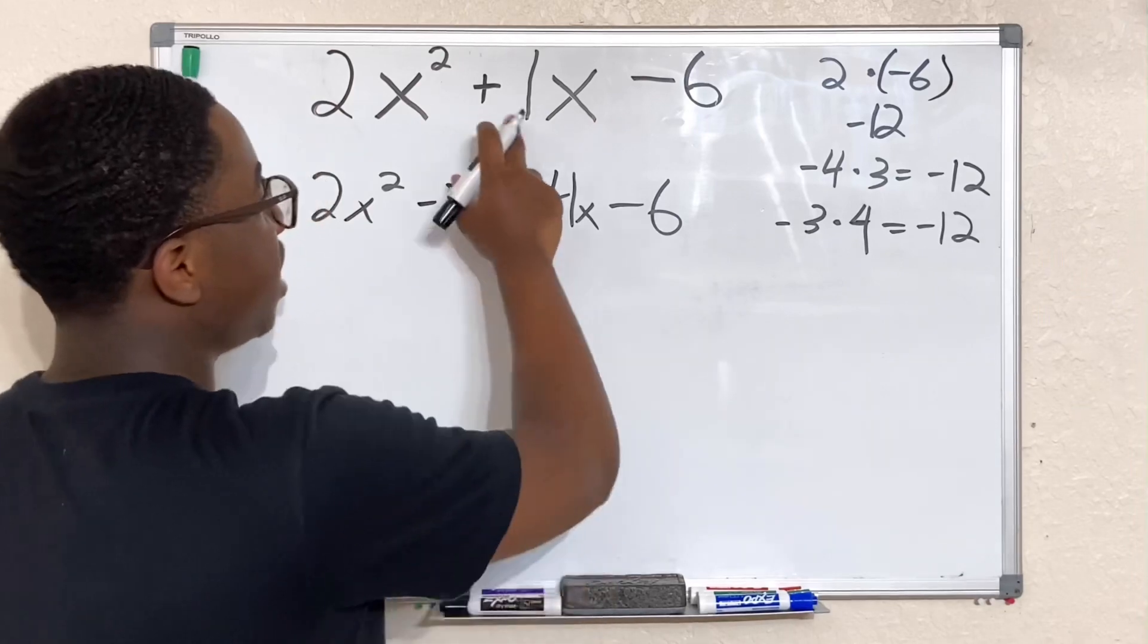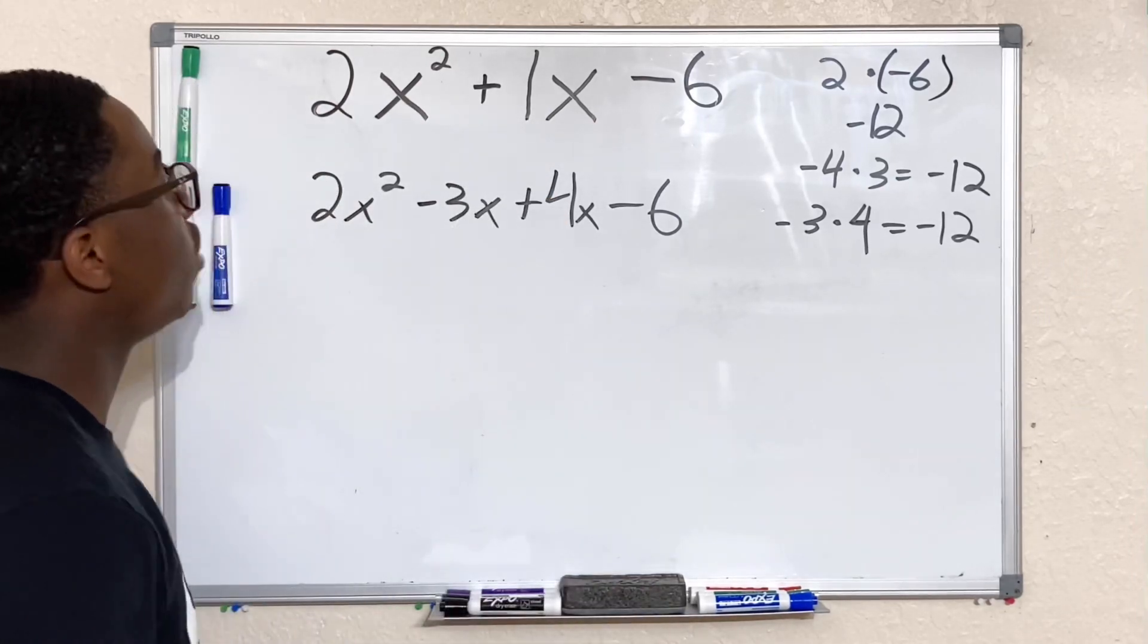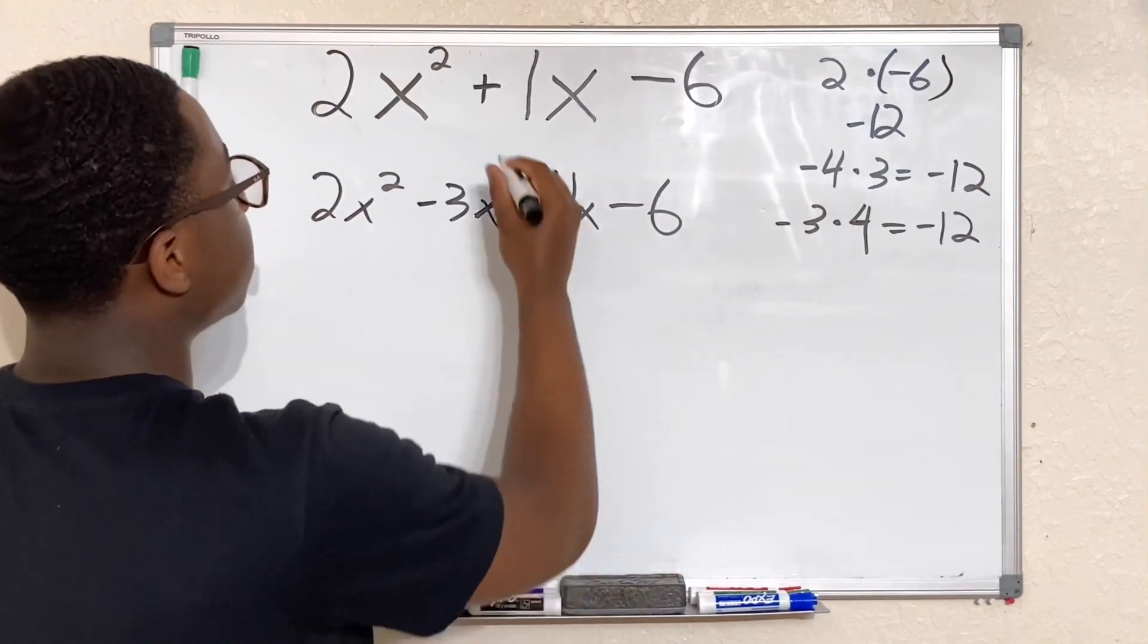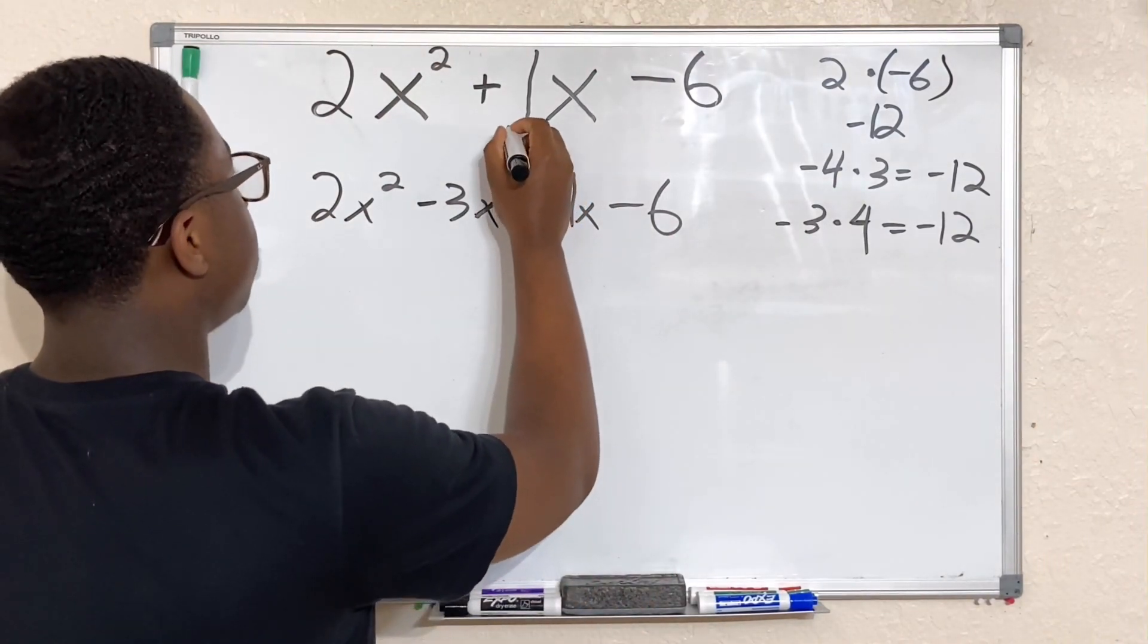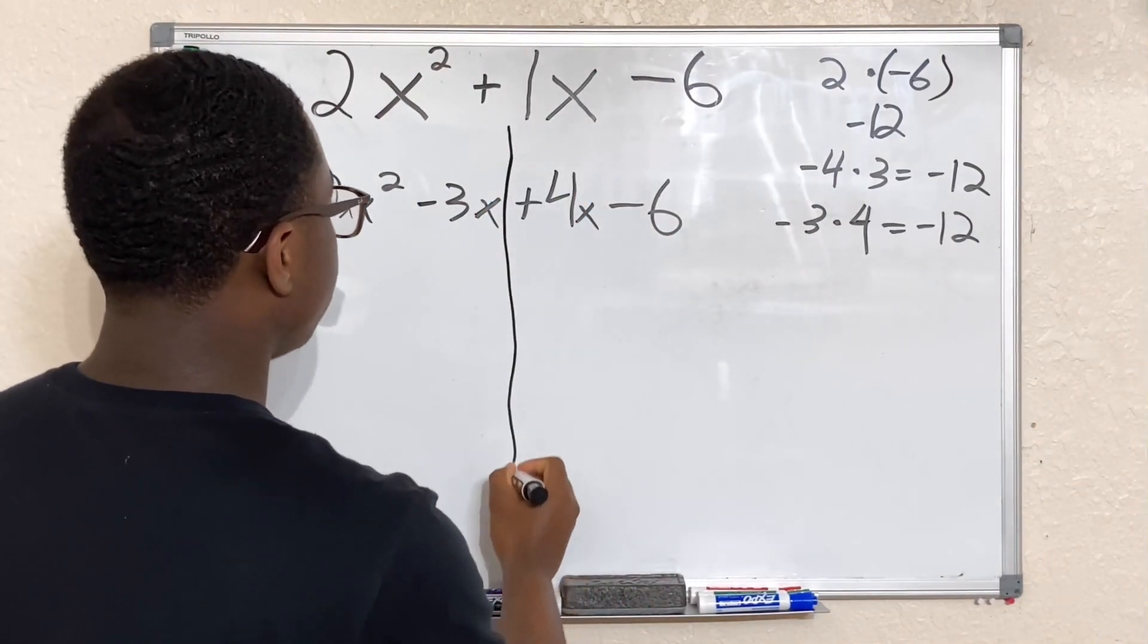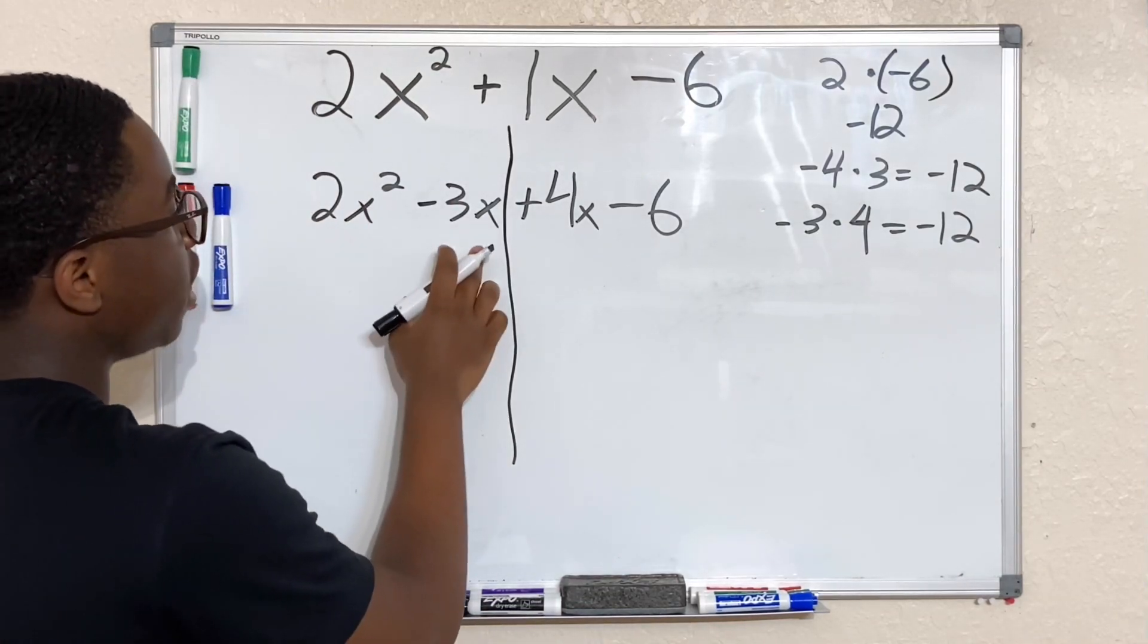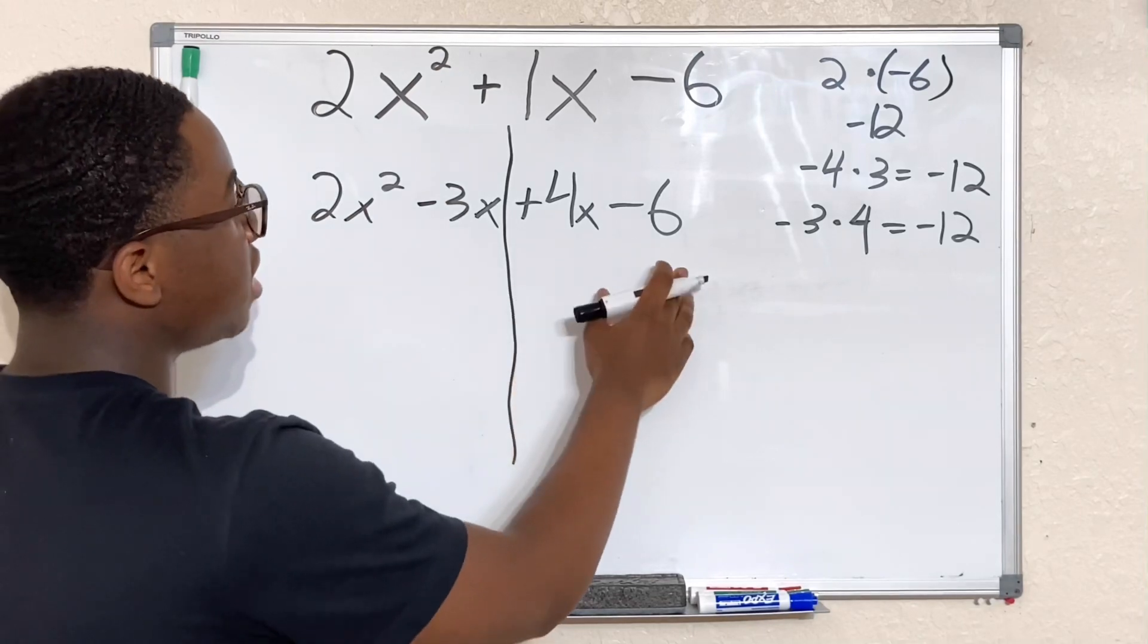So we brought everything down. And if you add like terms together, -3x plus 4x will give us 1x. That's why these two numbers had to add up to give us 1. So now the next step, after we did all this, we have to split the equation in half. We're going to draw a line right through, so now we have 2x squared minus 3x on one side and 4x minus 6.